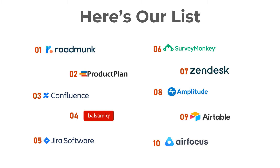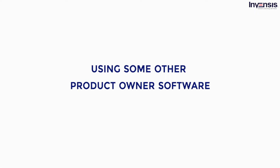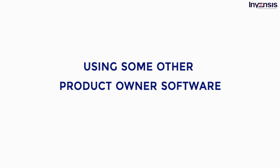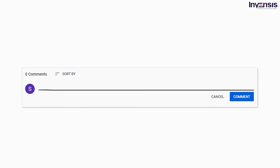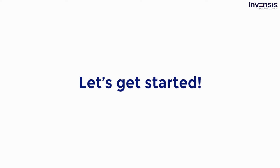Here are the top 10 product owner tools that you do not want to miss. The tools listed here are grouped into specific categories and are used by product teams for different product-related tasks, such as defining a product roadmap, user journey mapping, customer research, collaboration, and many other things. Please know that this list is subjective to change, so if you are using some other product owner software and ready to disclose it, please let us know in the comments section.